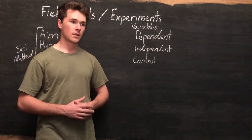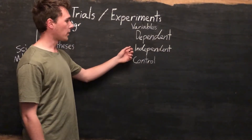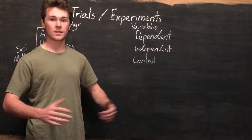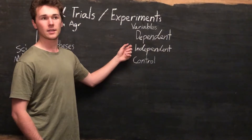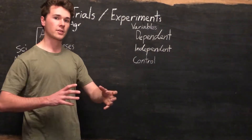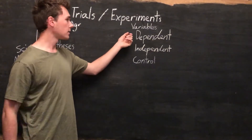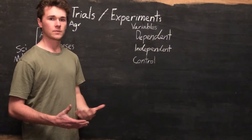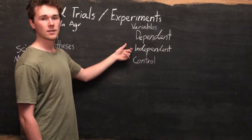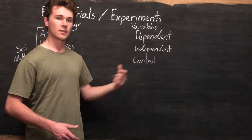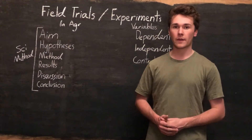What we do to one group we must do to the other, apart from applying our independent variable. For example, if we want to test two varieties of wheat, the independent variable is the variety of wheat — that's the thing we're changing — and we want to see how that affects grain yield, which we can measure in tonnage. The independent variable is what we're changing, the dependent is what we're measuring, and controls are everything else.